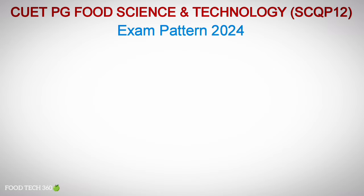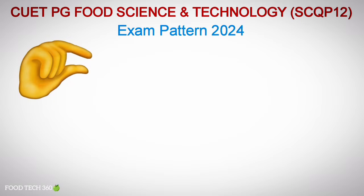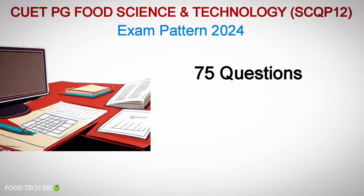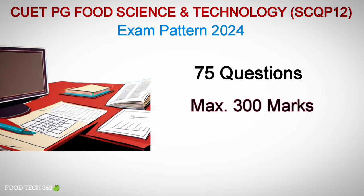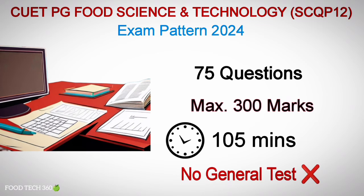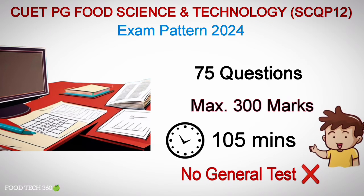Comparing with the previous year exams, this year's exam pattern is a bit different. As per CUETPG exam pattern, the paper comprises 75 questions with a maximum of 300 marks. The duration of the CUETPG exam is 105 minutes. As per the latest exam pattern, there would be no general test with each paper. However, candidates can choose general subject as a paper.